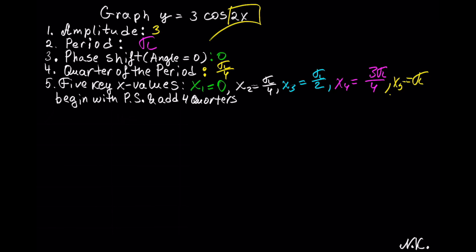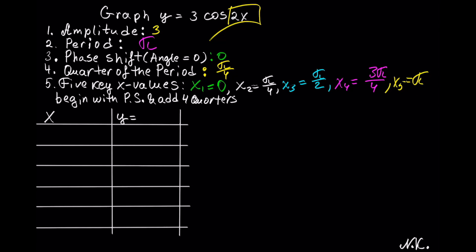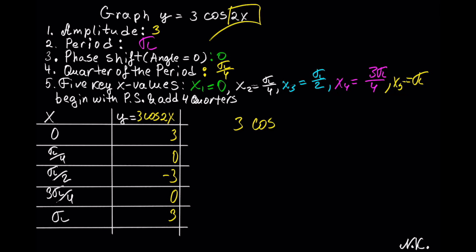When there is no phase shift, the last point should be equal to the period. Now we can set up our x and y table. The x-values are 0, π/4, π/2, 3π/4, and π. We need to substitute these into y equals 3 cosine of 2x. When there is no phase shift, cosine follows the pattern where the first y is the coefficient (3), then 0, then the opposite of the coefficient (−3), back to 0, and returns to 3 for the last point. You can also substitute the x-values directly into 3 cosine of 2x.